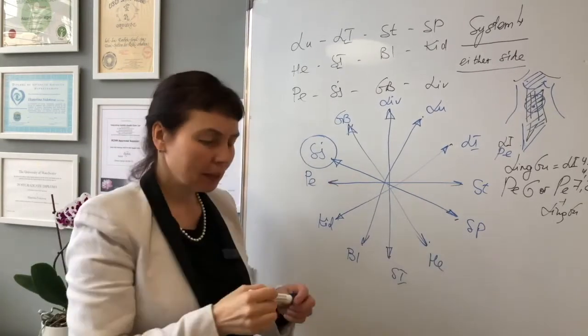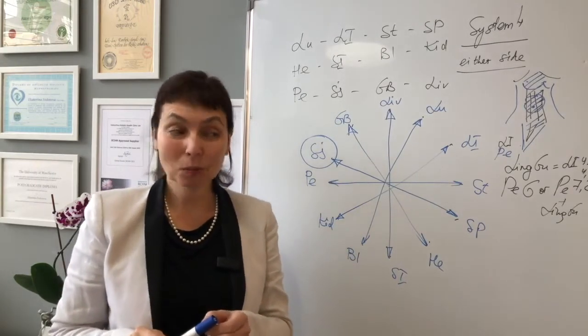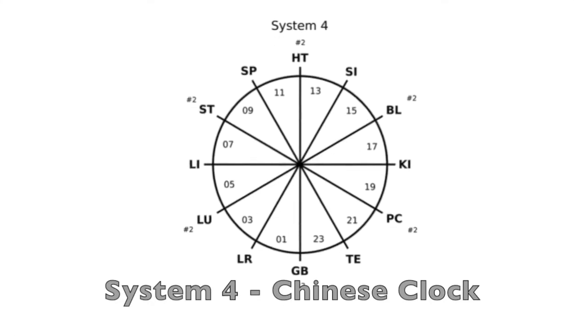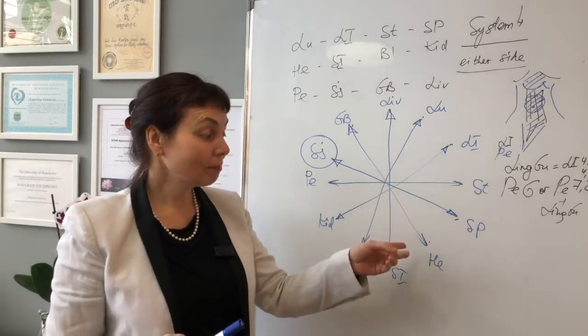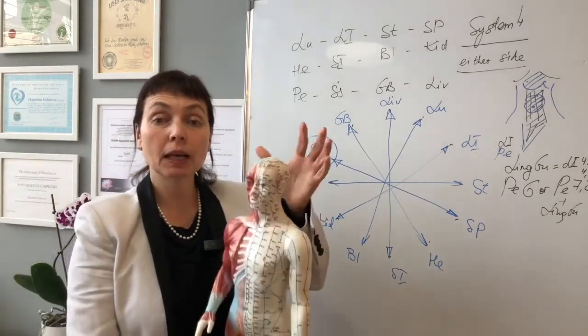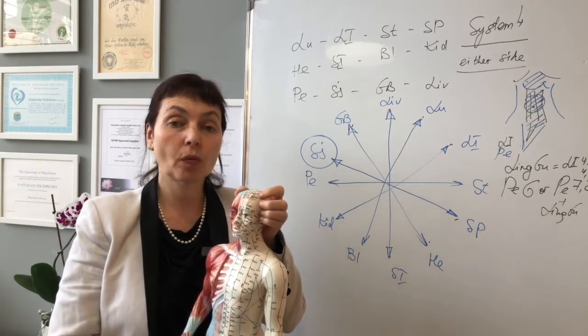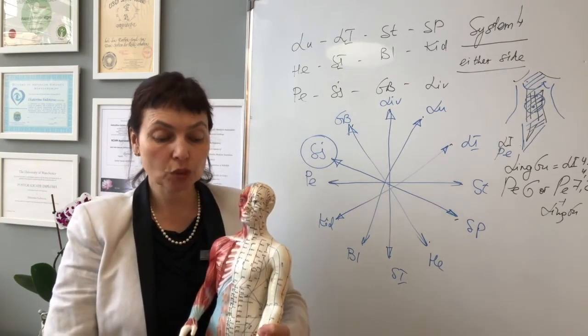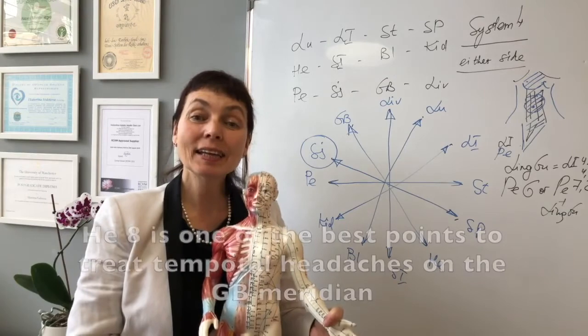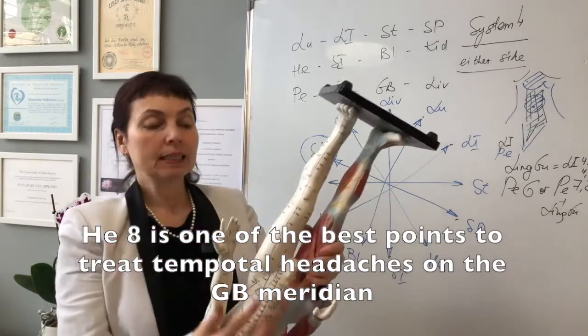Gallbladder will treat heart or any disorders on the heart meridian, and heart will treat gallbladder. One of the best examples is temporal headache on gallbladder meridian. From TCM we know Peter Deadman suggests, and my teacher, to treat heart. Which heart? Heart 8, one of the best points to treat temporal headache. Now knowing balance method, we know why. This is the head.